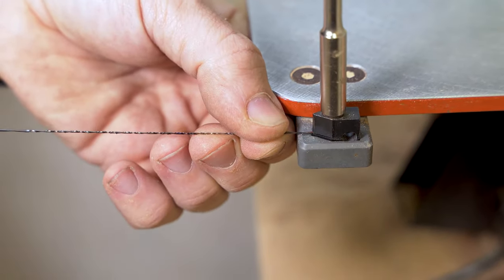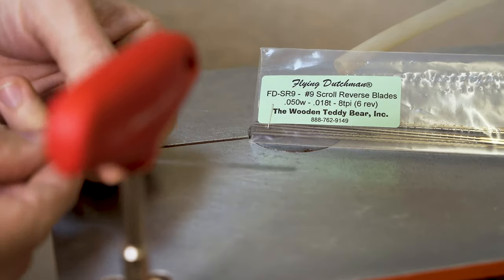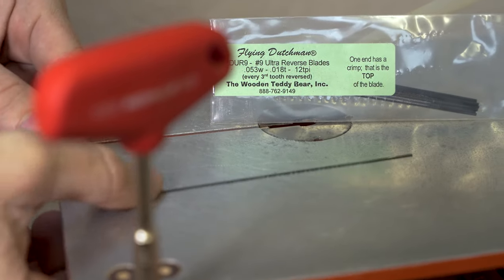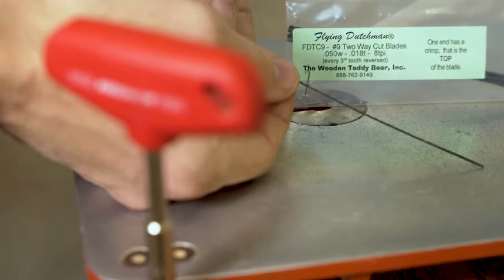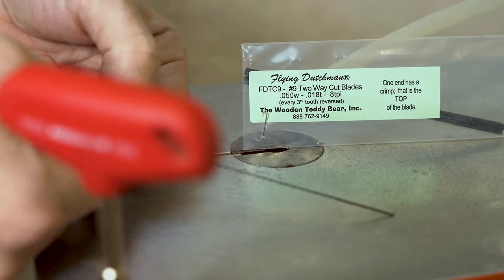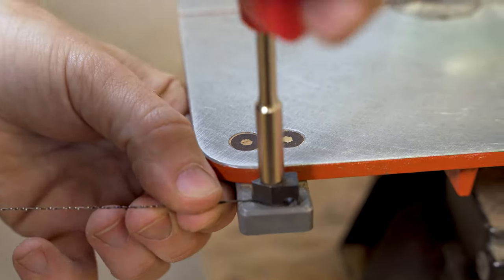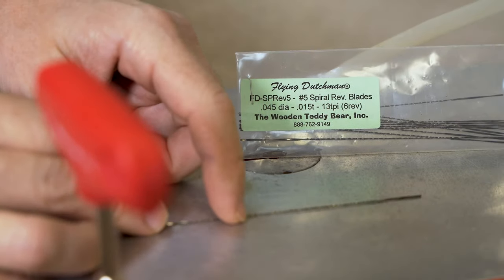So to rank those blades in order, my favorite Flying Dutchman blade for working in hardwood was the number nine reverse tooth blade followed by the number nine ultra reverse tooth blade. Next on the list then we have that two-way cut number nine and the final one a spiral blade. Probably a personal thing, I just don't get on with spiral blades.